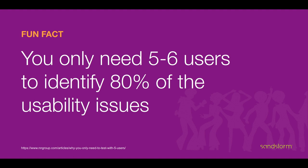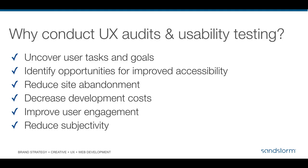Fun fact about usability studies: you only need five to six users in a user group to identify about 80% of the usability issues on a site. This is important because usability and accessibility can feel large and scary, but results can be achieved quickly and easily without spending a huge amount of money or recruiting large numbers of people.